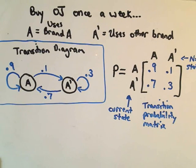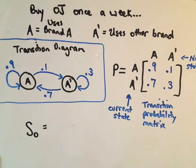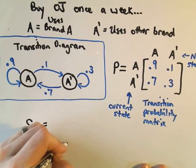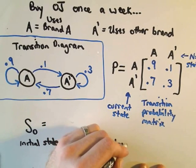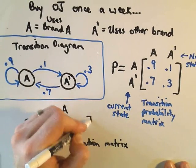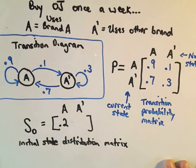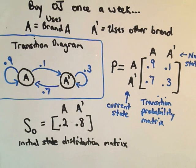Another bit of notation: I'm going to use S sub 0, which stands for the initial state distribution matrix. This has to do with the market share. We said initially brand A had 20% — or 0.2 — of the market, which means other brands control 80% of the market. So that's the initial state distribution matrix, sometimes called an initial state probability matrix.